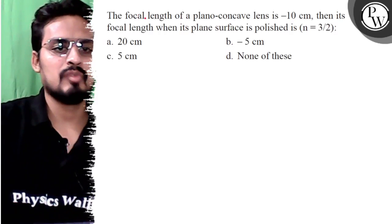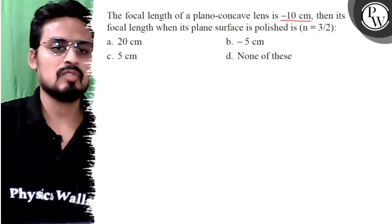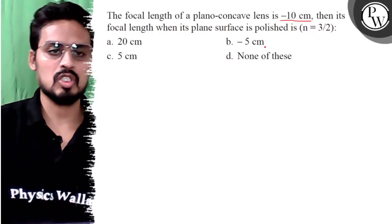Hello guys, let's see this question. The focal length of a plano-convex lens is minus 10 cm, then its focal length when its plane surface is polished is.